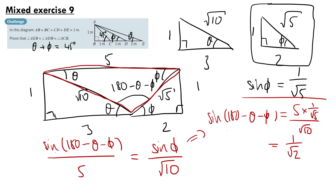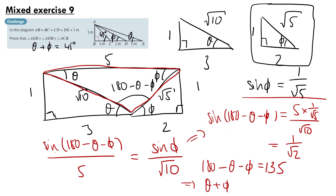Using inverse sine, and the fact that we know 180 minus theta minus phi must be obtuse from the diagram, we get that 180 minus theta minus phi equals the inverse sine of 1 over root 2. This is either 45 degrees or 135 degrees, and because we know it's obtuse we can say this equals 135 degrees. Therefore theta plus phi is equal to 45 degrees, as required.